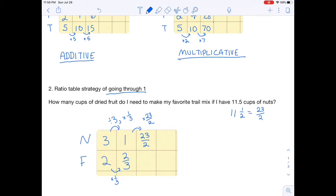With multiplicative reasoning, if I'm scaling it up by 23 halves, then I'm doing the same thing to my fruit. So two thirds times 23 halves is going to be 23 thirds or seven and two thirds. So in this case, the answer to my question is I need seven and two thirds cups of fruit.